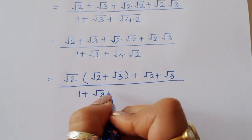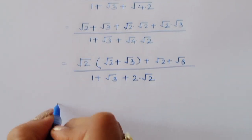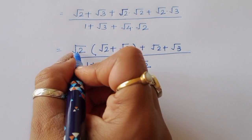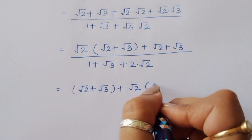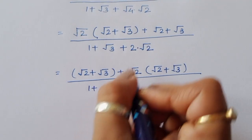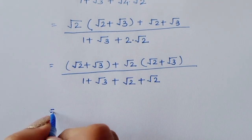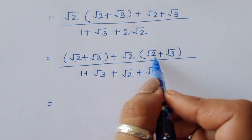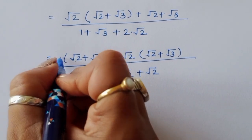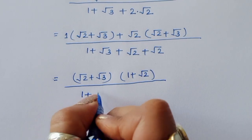The denominator: square root of 1 is 1, plus square root of 3, plus square root of 4 times square root of 2, and the value of square root of 4 is 2, so this is 2 times square root of 2. The numerator becomes square root of 2 plus square root of 3, plus square root of 2 times the quantity square root of 2 plus square root of 3. The denominator becomes 1 plus square root of 3 plus 2 times square root of 2.